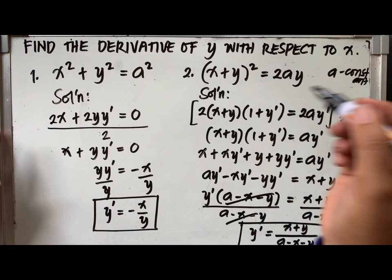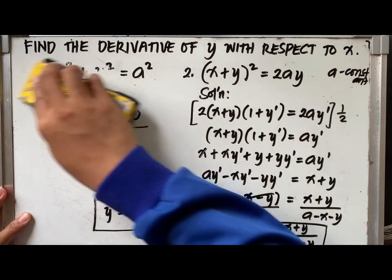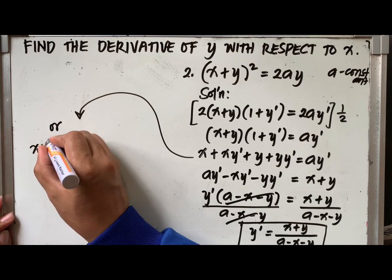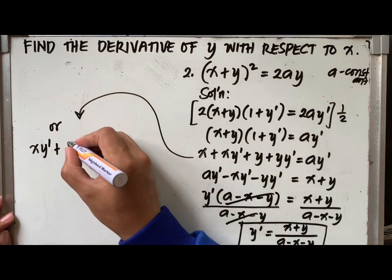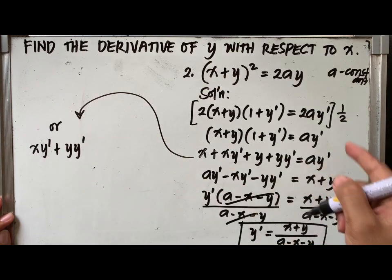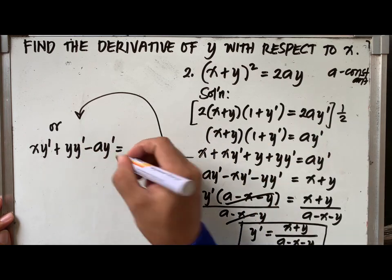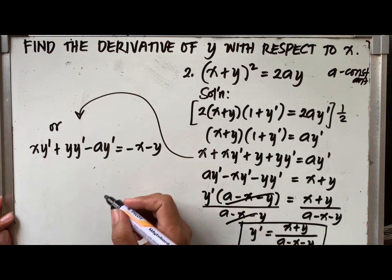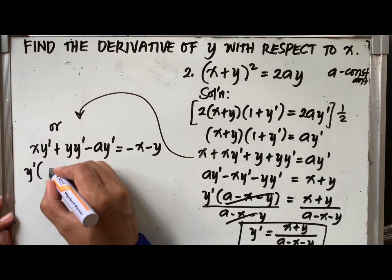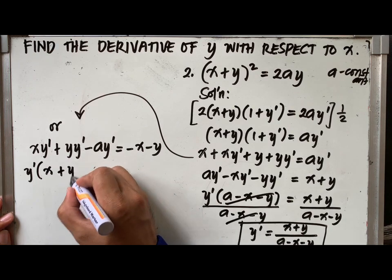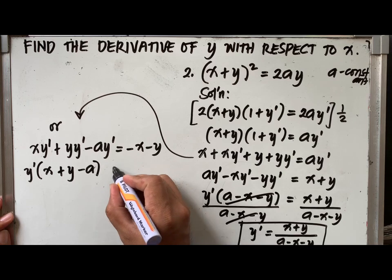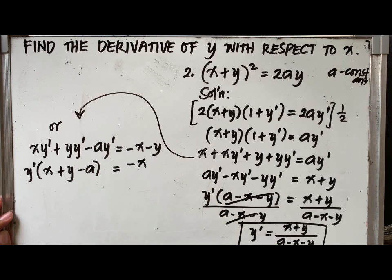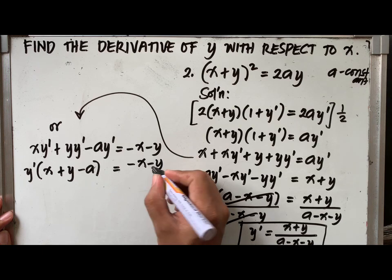I have another way of writing the final answer for example number 2. Retaining the positions of the terms in the left side and the right side of the equation, I have now x y prime plus y y prime minus a y prime equal to negative x minus y. As you can see, y prime is common in each term at the left side of the equation. Thus, we can factor out y prime.